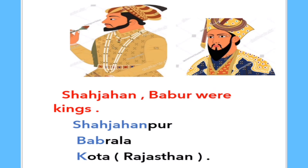Sajahan and Babar were kings. Sajahan means Sajahanpur, Babar means Babralla, and Kings — in Tamil, kings are called Raja — gives us Kota in Rajasthan. So Sajahanpur, Babralla, and Kota are all in Rajasthan.